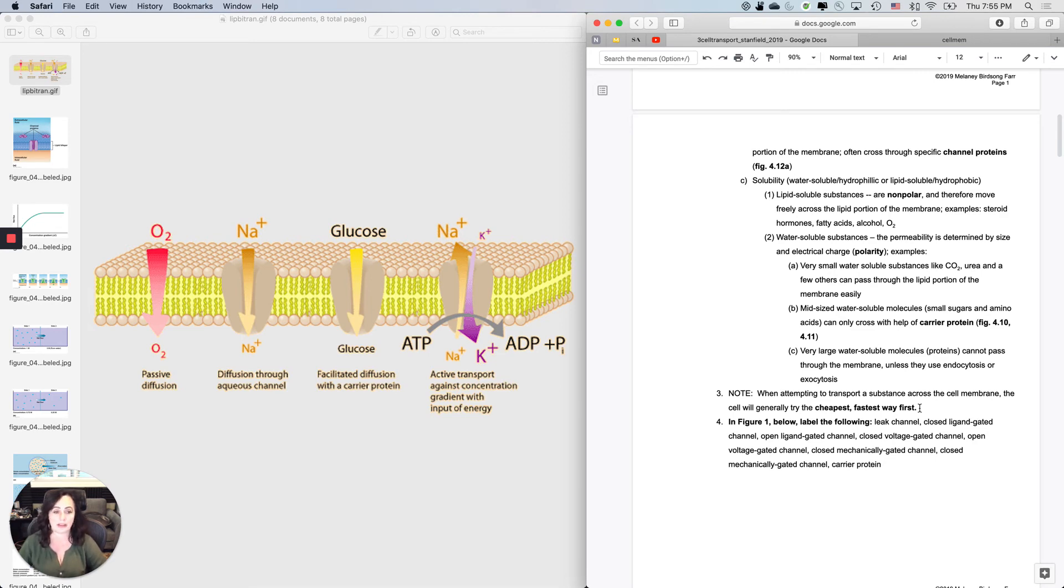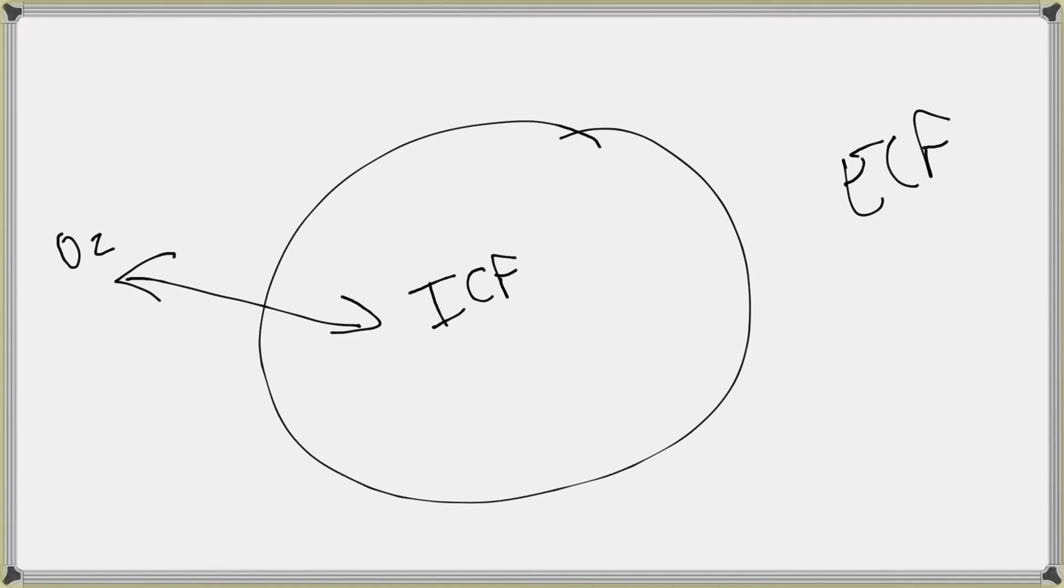Cells are frugal and lazy and they will try to move everything the cheapest, fastest way that they possibly can. Let's talk briefly about what's cheap and what's fast. Drawing a little whiteboard, this is the ICF and this is the ECF. Let's move oxygen gas which is lipid soluble. That can move straight in and out across the plasma membrane anywhere it wants to. It's going to be super cheap, cost you pretty much nothing. It's going to be super fast because it has no limit to the number of places that it can actually be transported. This process is simple diffusion.